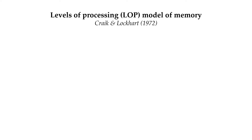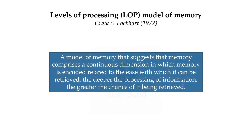So what's the diagram for this one? What does this one look like? There isn't really a flowchart that describes the levels of processing model. I do have a definition for you though, and it's this: it's a model of memory that suggests that memory comprises a continuous dimension in which memory is encoded, related to the ease with which it can be retrieved. The deeper the processing of information, the greater the chance of it being retrieved.